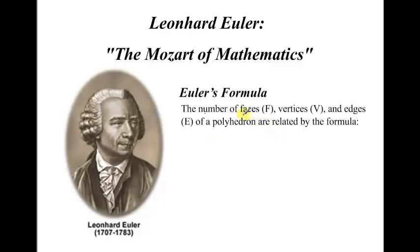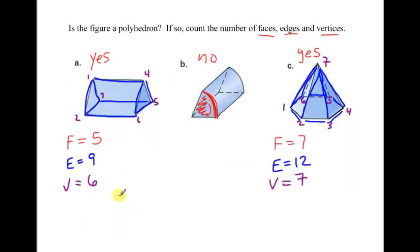One of them we use is called Euler's formula. Euler's formula relates the number of faces, vertices, and edges of a polyhedron. The formula goes like this: if you take the number of vertices and you add to that the number of faces, it's always going to equal the number of edges plus 2. Euler's formula is that the number of faces plus the number of vertices always equals the number of edges plus 2.